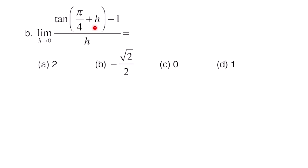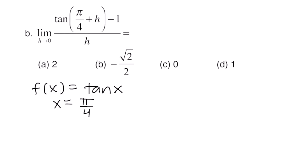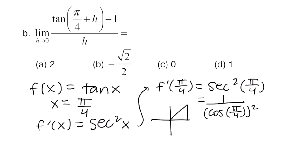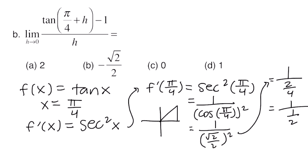Part B says the limit as h goes to 0 of tangent of π/4 plus h minus 1 all over h. We identify f as tangent and x as π/4. The derivative of tangent is secant squared, so we get secant squared of π/4. Since secant equals 1 over cosine, this becomes 1 over cosine of π/4 quantity squared. Cosine of π/4 is root 2 over 2, so we get 1 over (root 2 over 2) squared, which is 1 over (2/4) = 1 over 1/2 = 2. The final answer is a.